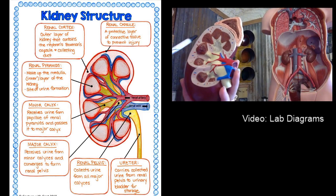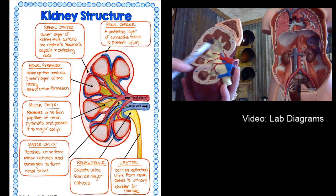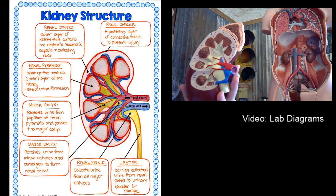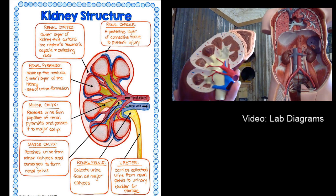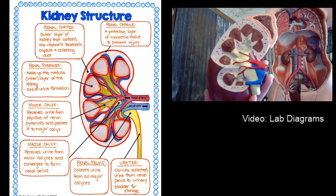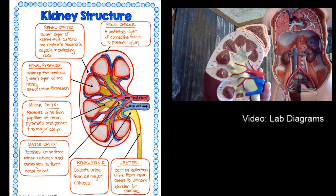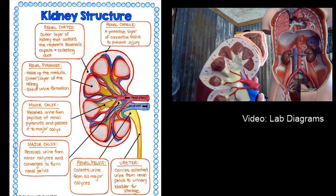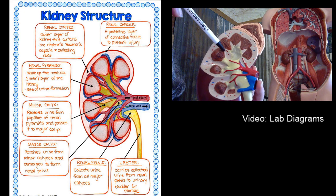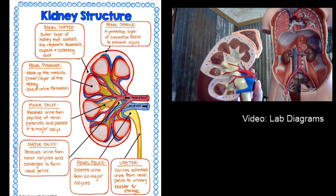When you cut the kidney open, you've got two main areas: this white-colored portion is called the renal cortex, and then all the other stuff in the middle is the renal medulla. The top left box is where you put renal cortex — it's the outer layer of the kidney that contains the nephrons, Bowman's capsules, and the collecting duct. Each individual unit of a kidney is called a nephron, and you have millions of these working together to filter the blood.